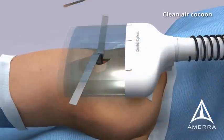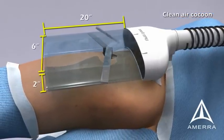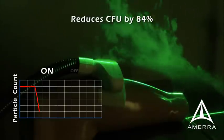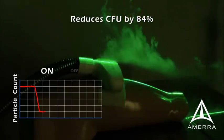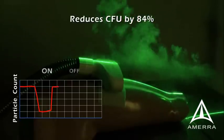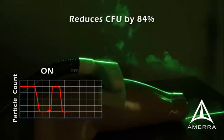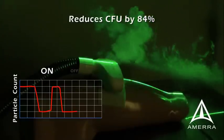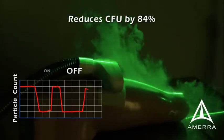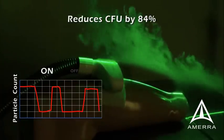The clean air cocoon produced by the AVS creates a protective environment of 6 by 20 inches with a 2-inch depth. Particle counter analysis shows that a surgical incision environment may contain many thousands of bacteria-carrying particles per cubic meter. As the AVS airflow is turned on, the system aggressively reduces the particle count and presence of microorganisms by over 84%. The AVS accomplishes this even during highly dynamic procedures such as hip arthroplasty, greatly reducing the presence of potentially infection-causing organisms.